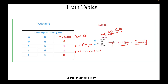For the fourth row, both A=1 and B=1: 1-bar×1 + 1×1-bar = 0×1 + 1×0 = 0. So when both inputs are 1, the output of the XOR gate is 0. This is why it is called exclusive OR — only when exactly one of the inputs is 1 is the output 1, unlike the OR gate where both inputs being 1 also gives output 1.